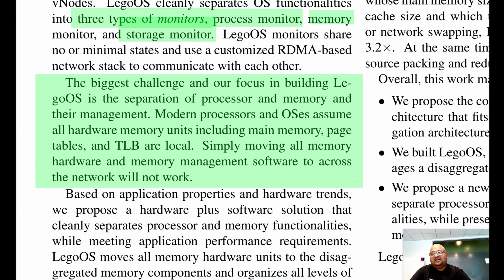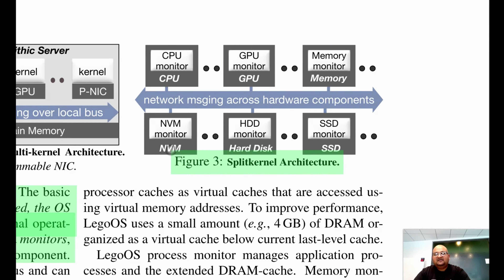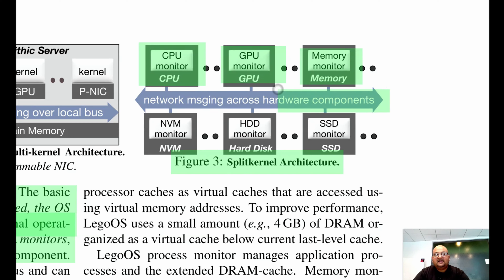One of the main design challenges in implementing this kernel is memory management over a bunch of remote machines. Modern processor and OS architecture has a lot of machinery like page tables and translation lookaside buffers that manage local memory. We need to design something that functions similarly but manages memory across a range of machines. At a high level, the split-kernel architecture has individual monitors managing local pools of resources like storage, RAM, or CPU, coordinating via messaging on the network.